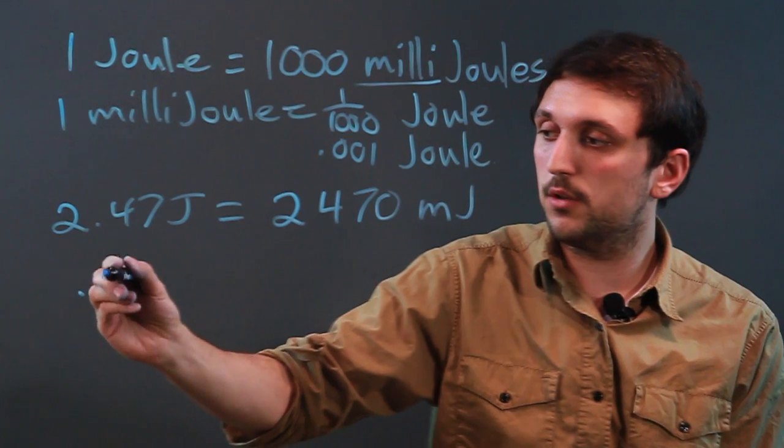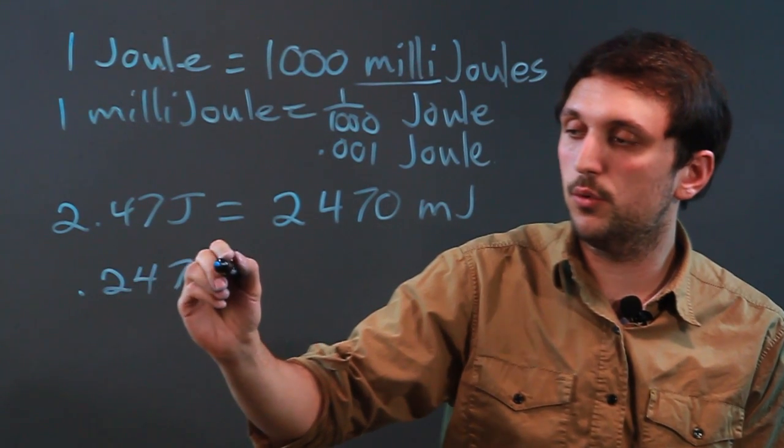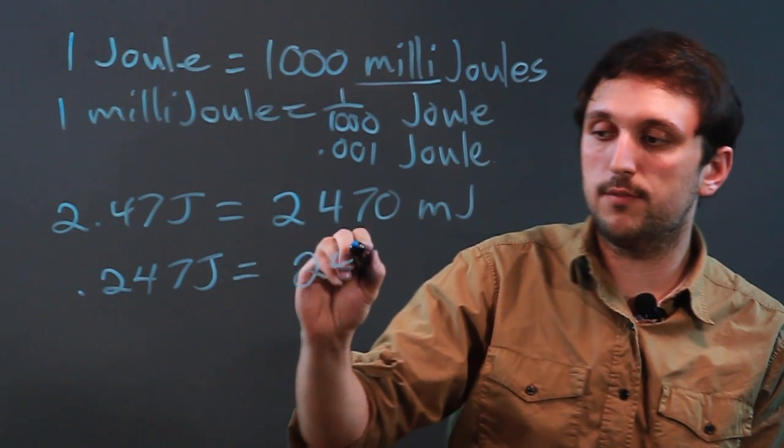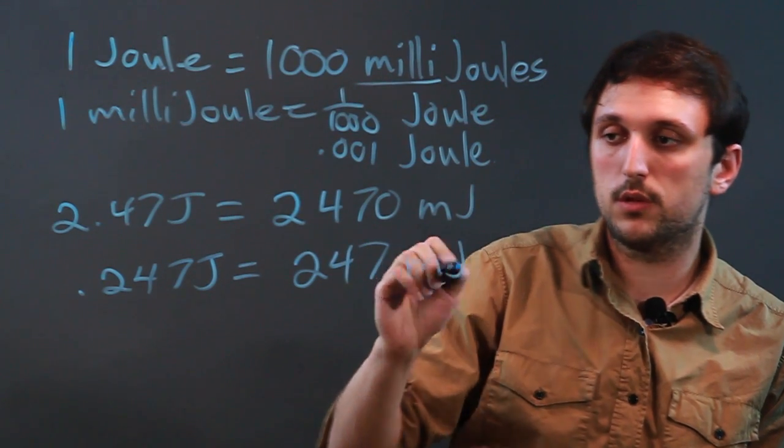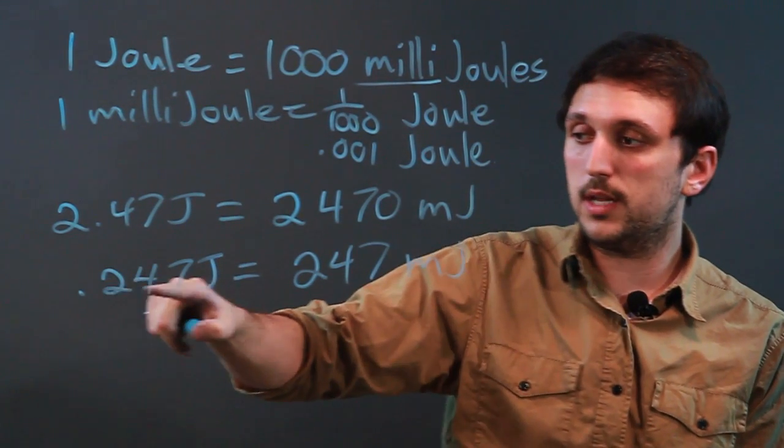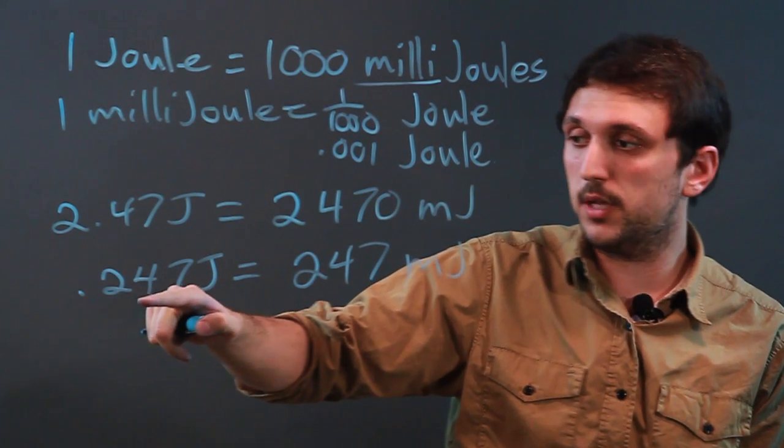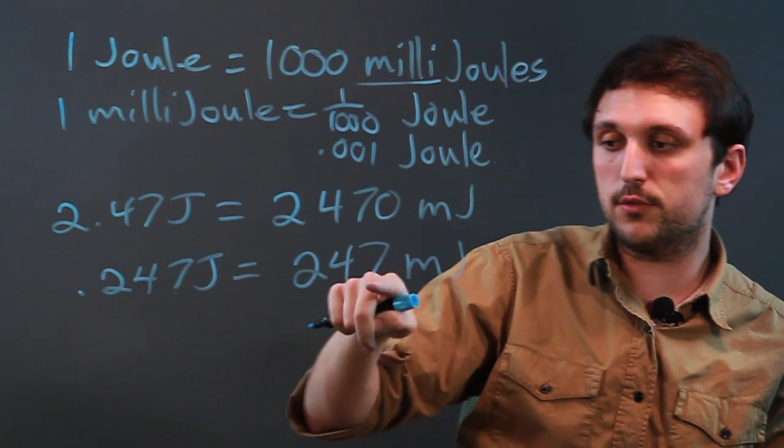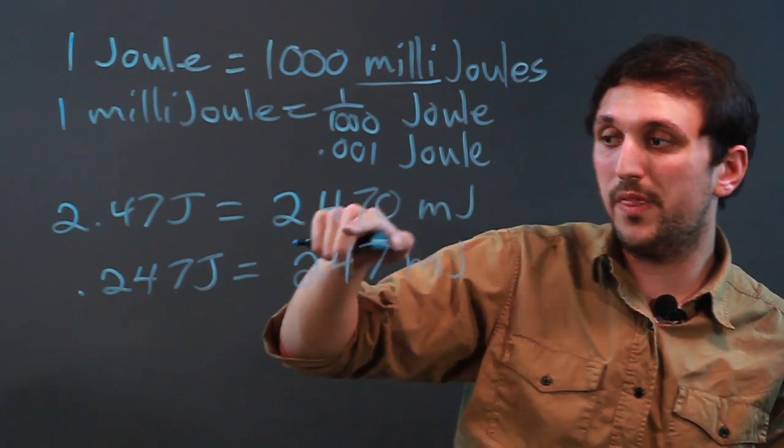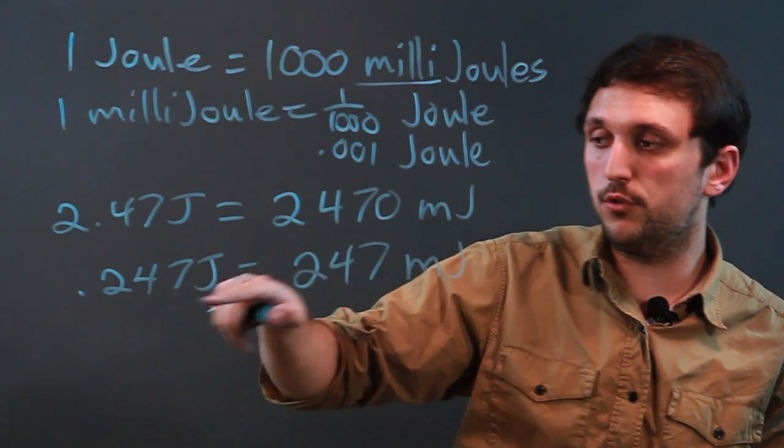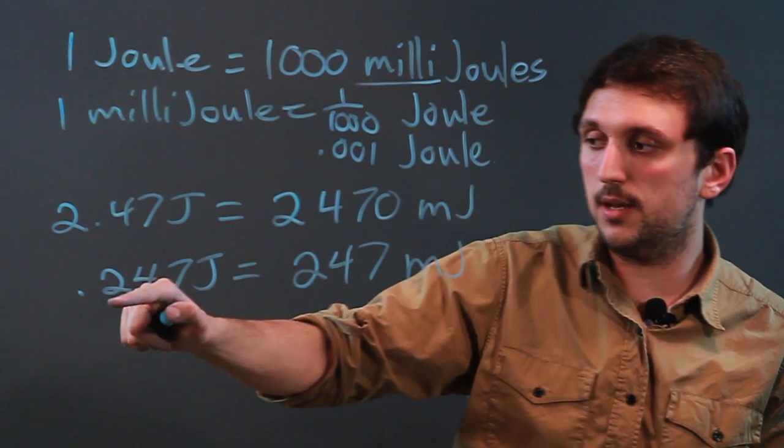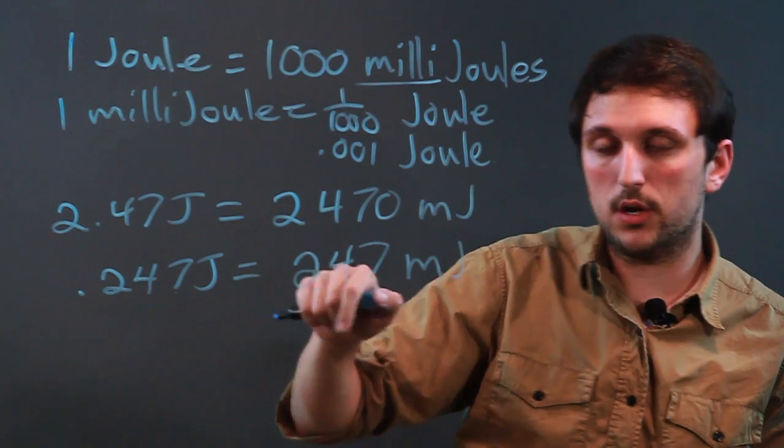If we have .247 joules, that's going to equal 247 millijoules. Because what we did here is, this is the tenths place, the hundredths place, and the thousandths place. So if this is the thousandths place, 1,000th of a joule is 1 millijoule. So that's 7, 4 is going to be the tens, and the tenths is going to be the hundredths.